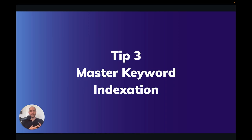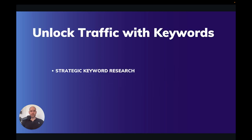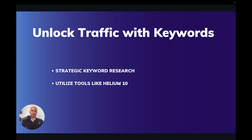Tip number three — this is really big and something you need to be thinking about from the very beginning, even when you launch your product, but especially later on with PPC. Your keyword indexation is not something you can just set once and forget — you need to be continually iterating to index for more keywords. From the very beginning, you want to be doing strategic keyword research using tools like Helium 10 and Cerebro, where you can do a reverse ASIN search on your top 10 competitors and figure out the most high-volume keywords they're ranking for and which ones are most relevant to your product.